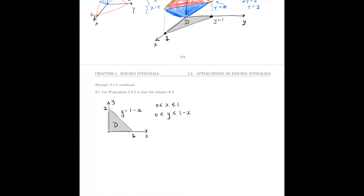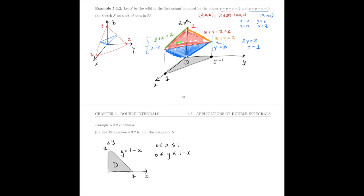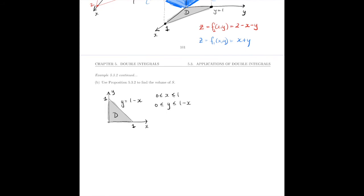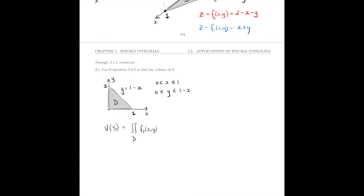Now we want to find the volume of that solid, which means we'll do the top bound, the plane in red, minus the bottom bound. Our plane in red, if we solve for z, is z = f₂(x,y) = 2 - x - y. Our plane in blue, the bottom bound, is z = f₁(x,y) = x + y. The volume of S is the double integral over D of f₂ minus f₁ dA.